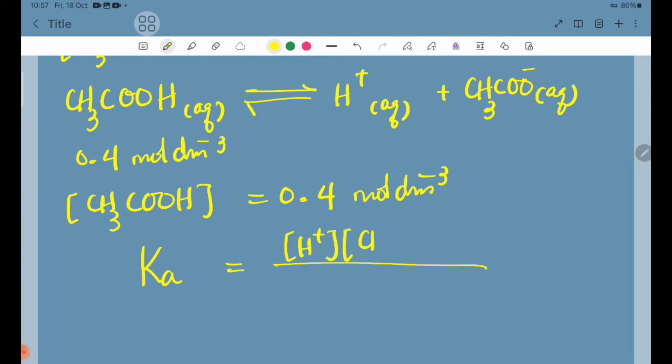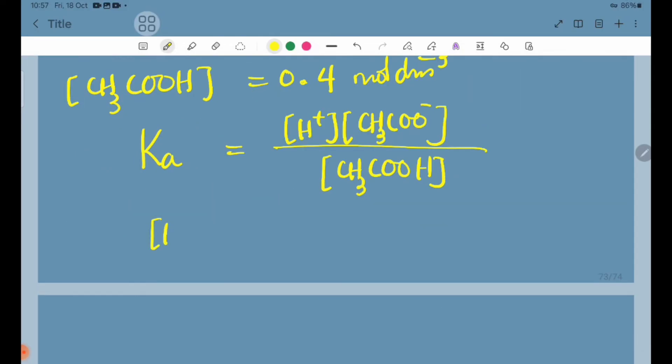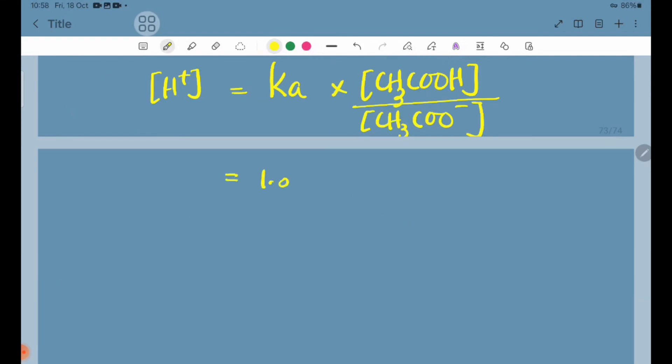Ka expression: H plus ion concentration times CH3COO minus concentration divided by CH3COOH concentration. 1.8 into 10 power minus 5 into 0.4 divided by 0.27 equals 2.66 into 10 power minus 5 mol per dm³.